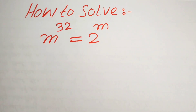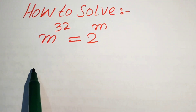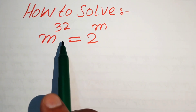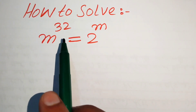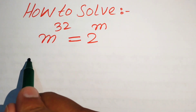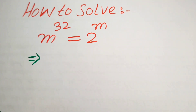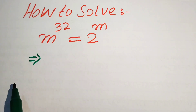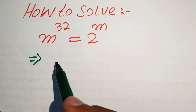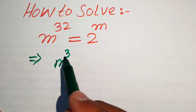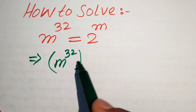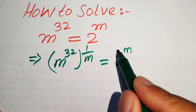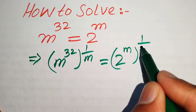The very first step is to move the variable term m to the left hand side and move all other terms like 32 to the right hand side. In order to move m, we take the mth root on both sides. So we write m to the power of 32, whole exponent 1 over m, equals 2 to the power of m, whole power 1 over m.